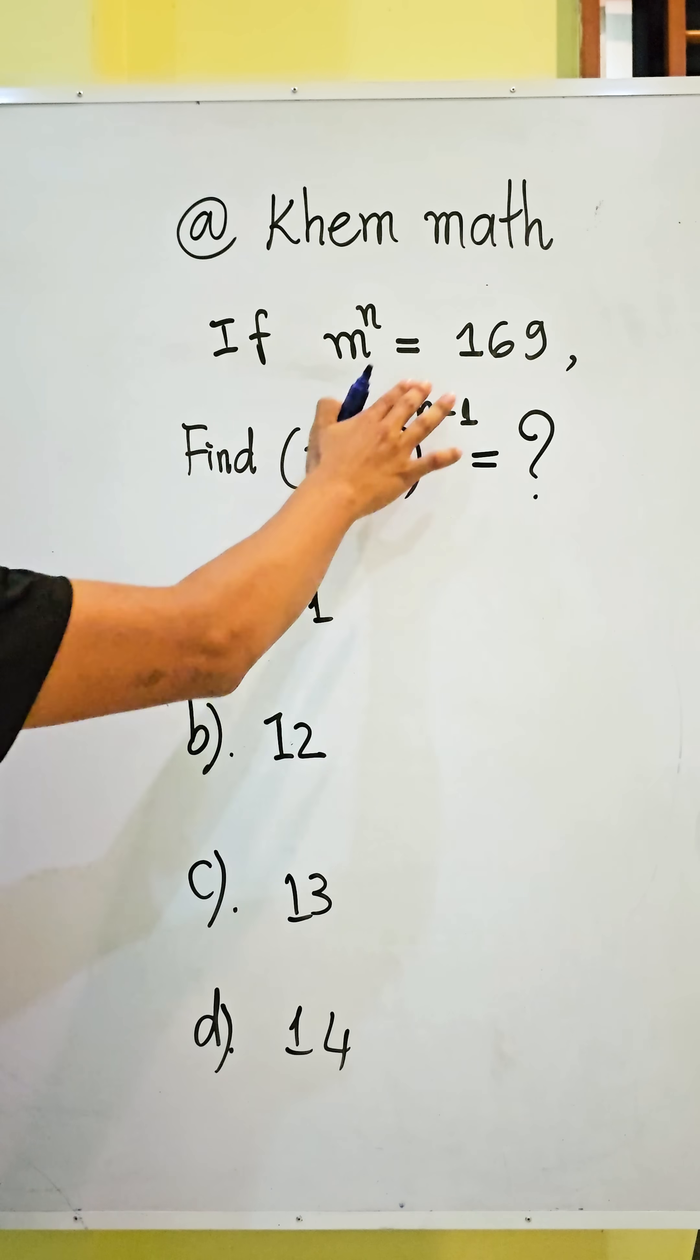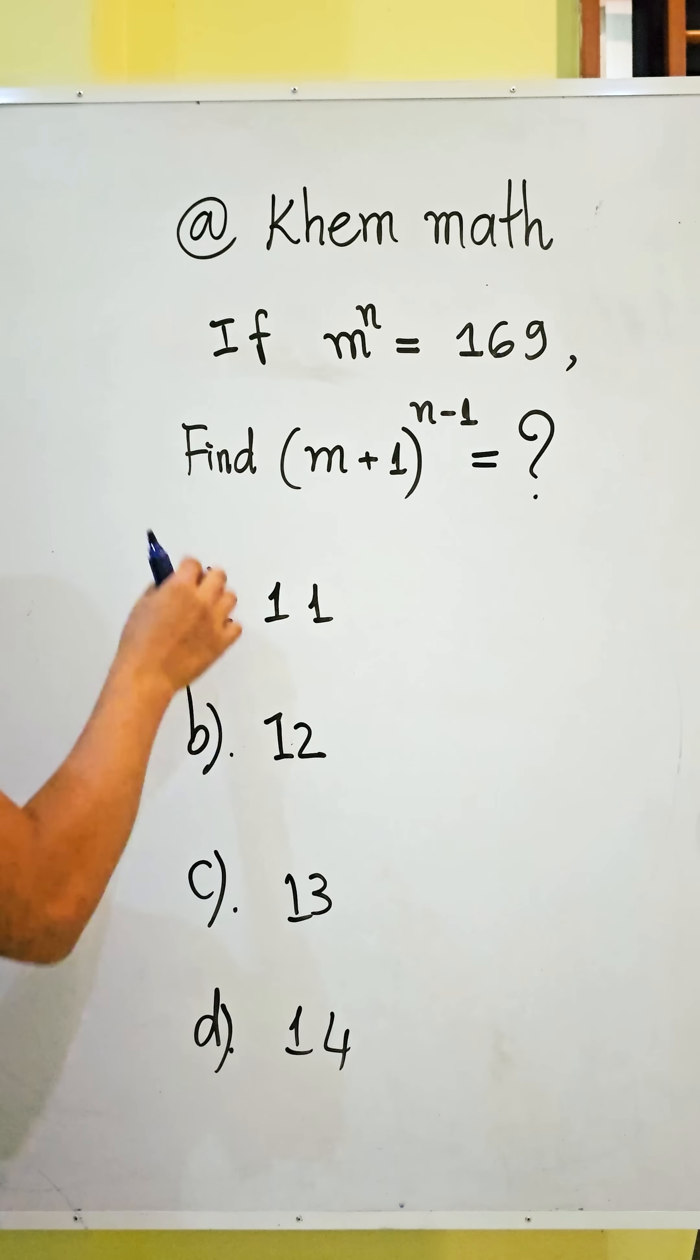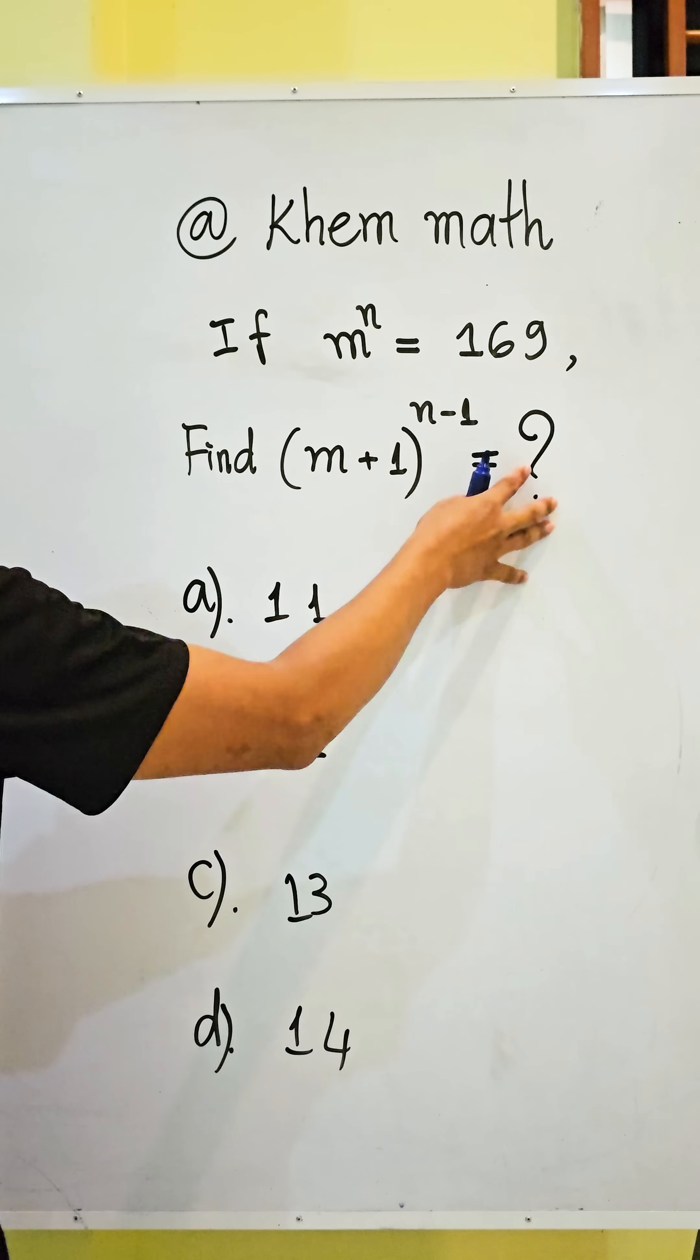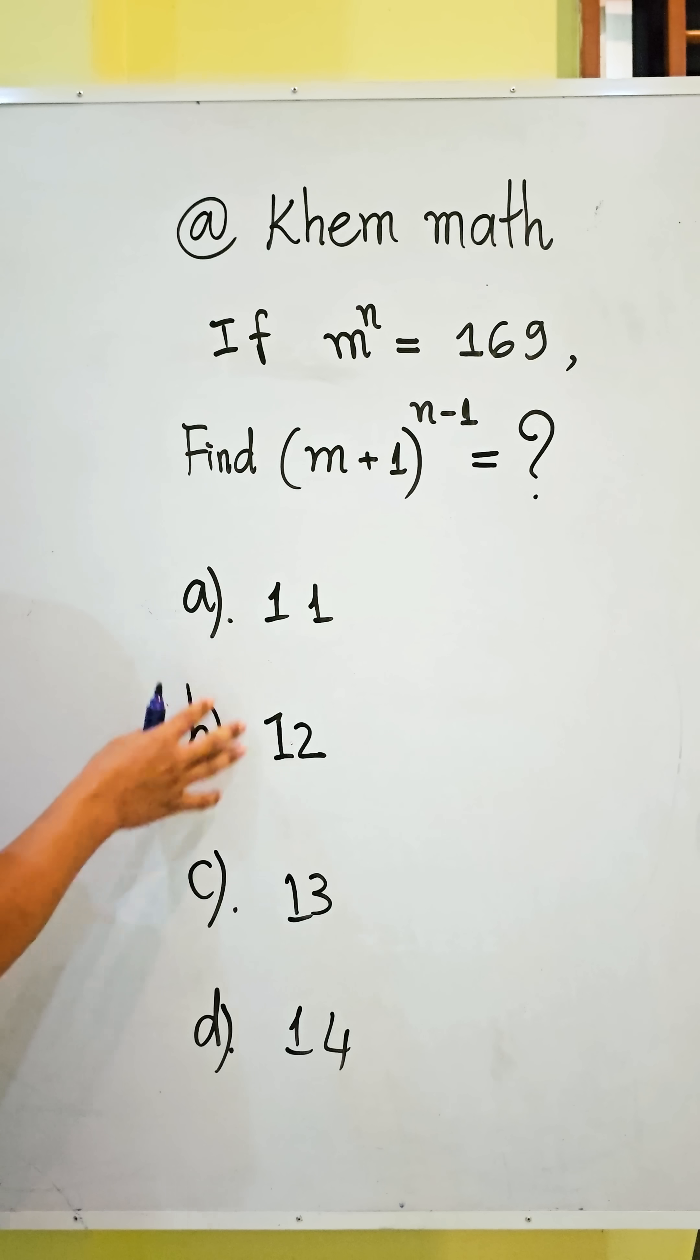If m power n equals 169, find the value of our expression m plus 1 all power n minus 1. The answer choices are: a) 11, b) 12, c) 13, d) 14.